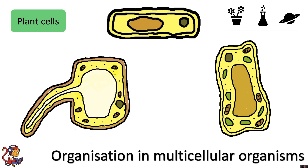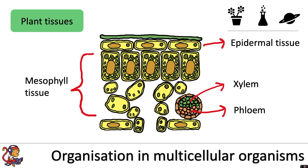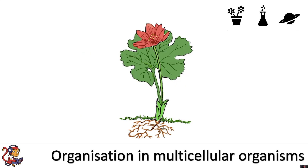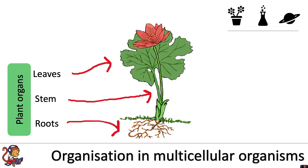This hierarchy also exists within plants. There are also many specialised plant cells that work together to form different plant tissues. Examples of tissues in the plant include things such as the epidermal tissue, the xylem and phloem, and the mesophyll tissue, which are all found in the leaf. And these plant tissues work together to form organs, for example leaves, stems, and roots.